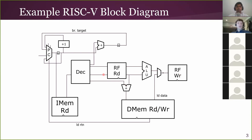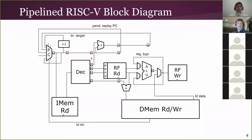We can also have control flow instructions — branches. We fetch an instruction from instruction memory, decode it as a branch, compute the branch target, and that becomes the next address we need to fetch. That diagram was not a very deeply pipelined diagram. To get high performance, we're going to pipeline this logic so that we can work on multiple instructions simultaneously.